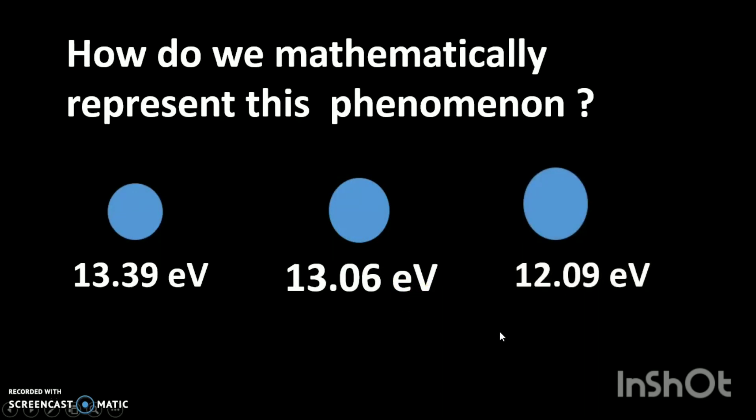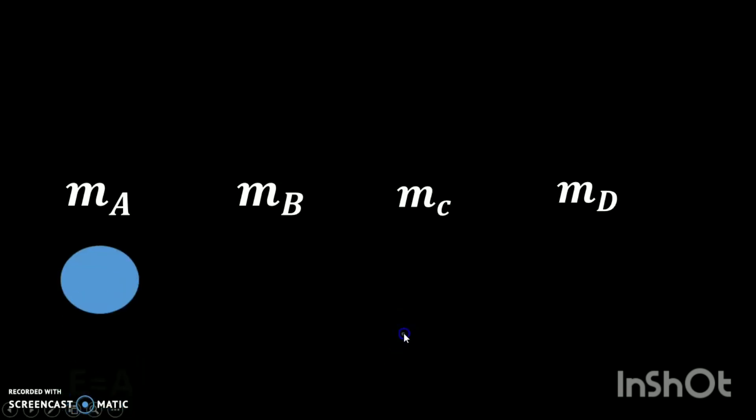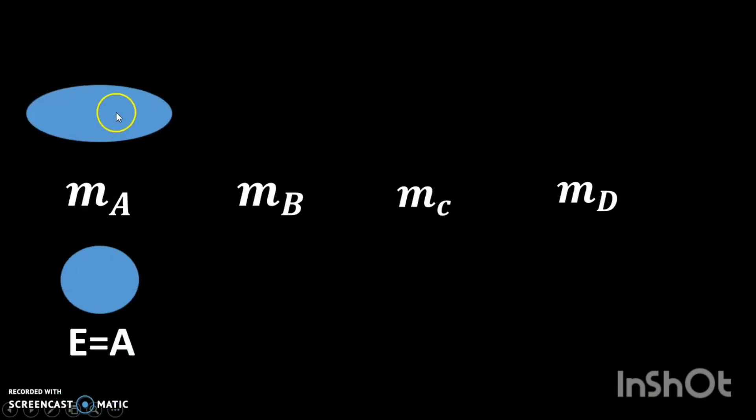Well, let's say that we know for sure that the particle has energy A, and let us say that the particle is represented by the mathematical object m_A. It could be anything - it could be a function, an element of a ring, a manifold - just some mathematical object that we have yet to determine.